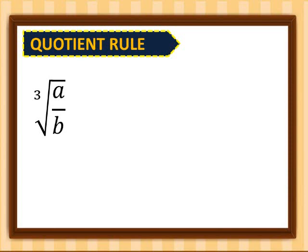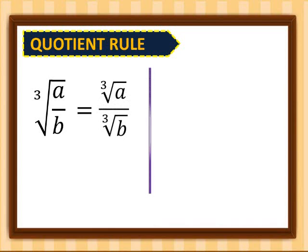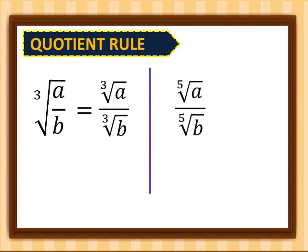So let's have here cube root of A over B. If you're going to separate this, this would become cube root of A over cube root of B. Or you may combine them also. So let's have here fifth root of A over fifth root of B — this would become fifth root of A over B. But take note, you can only combine them under one radical if they have the same index.